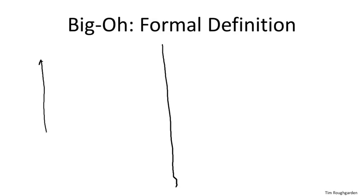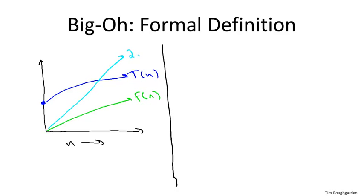So pictorially, you could imagine that perhaps we have T of n denoted by this blue function here. And perhaps F of n is denoted by this green function here, which lies below T of n. But when we double F of n, we get a function that eventually crosses T of n and forevermore is larger than it.